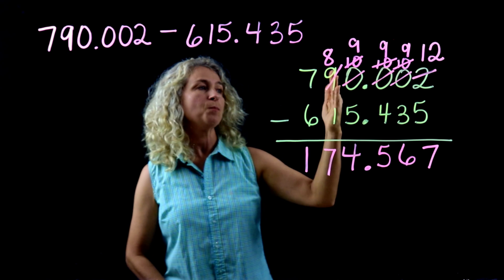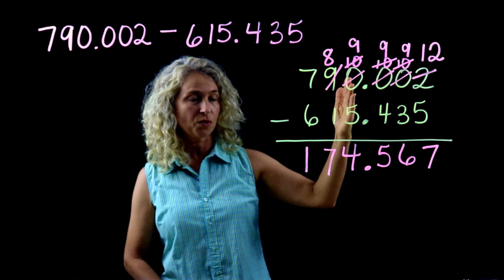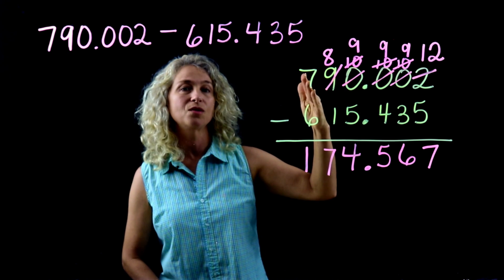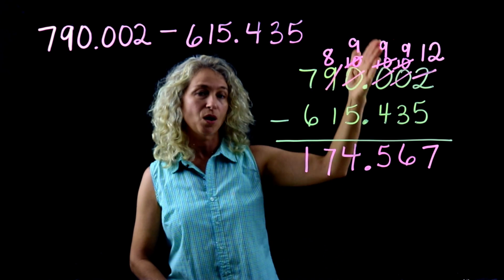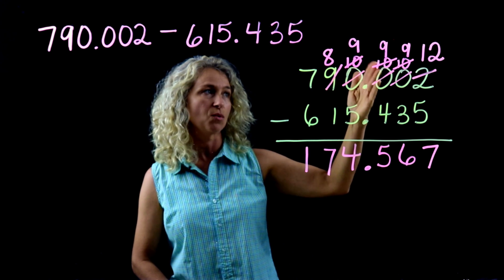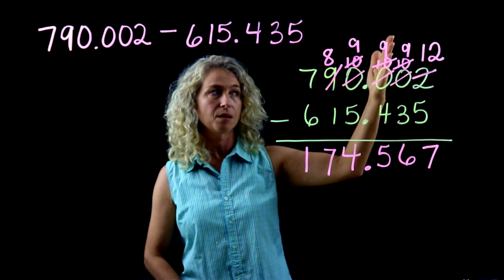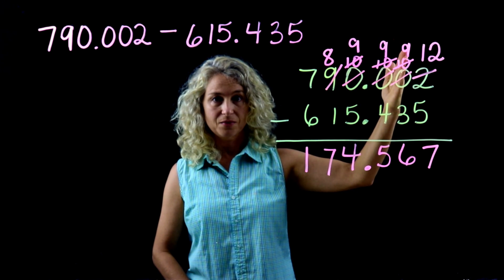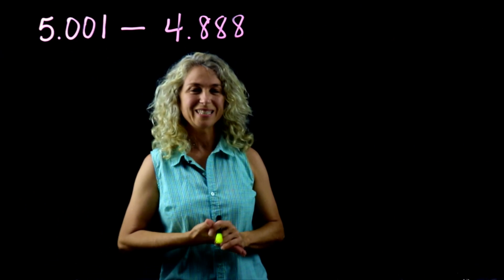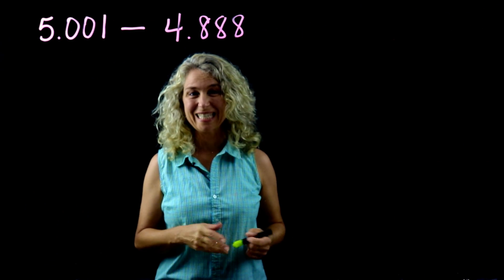Your final answer is one hundred seventy-four and five hundred sixty-seven thousandths. To recap: when you borrow across a zero, it becomes a nine.